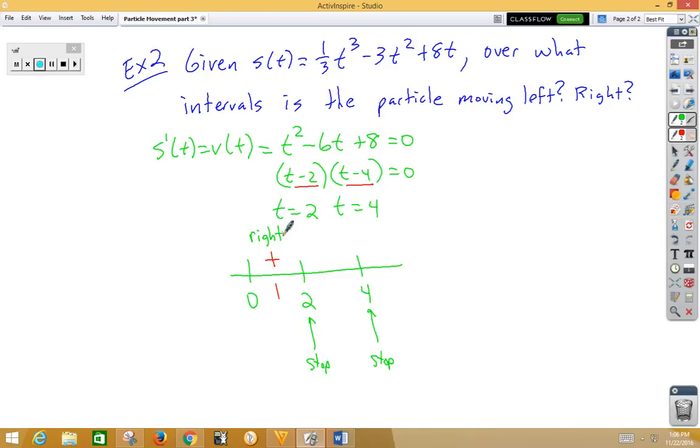Pick something between two and four. Let's try three. Plug in, we get a positive times a negative is a negative. So the particle is moving to the left. Pick something to the right of four. Let's say five. If we plug in a five, we get a positive times a positive is a positive. It means the particle is moving to the right.